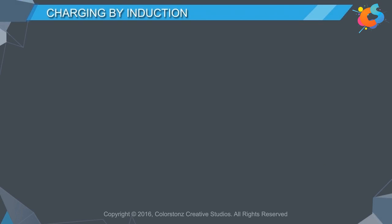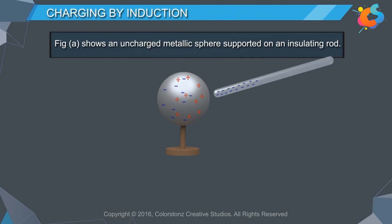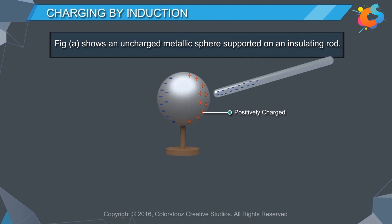Charging by induction: Figure A shows an uncharged metallic sphere supported on an insulating rod. A negatively charged plastic rod is brought close to the sphere. Free electrons in the sphere move away from the plastic rod due to repulsion and gather at the other end of the sphere. The near end becomes positively charged due to the deficit of electrons, and the other end becomes negatively charged due to the excess of electrons.